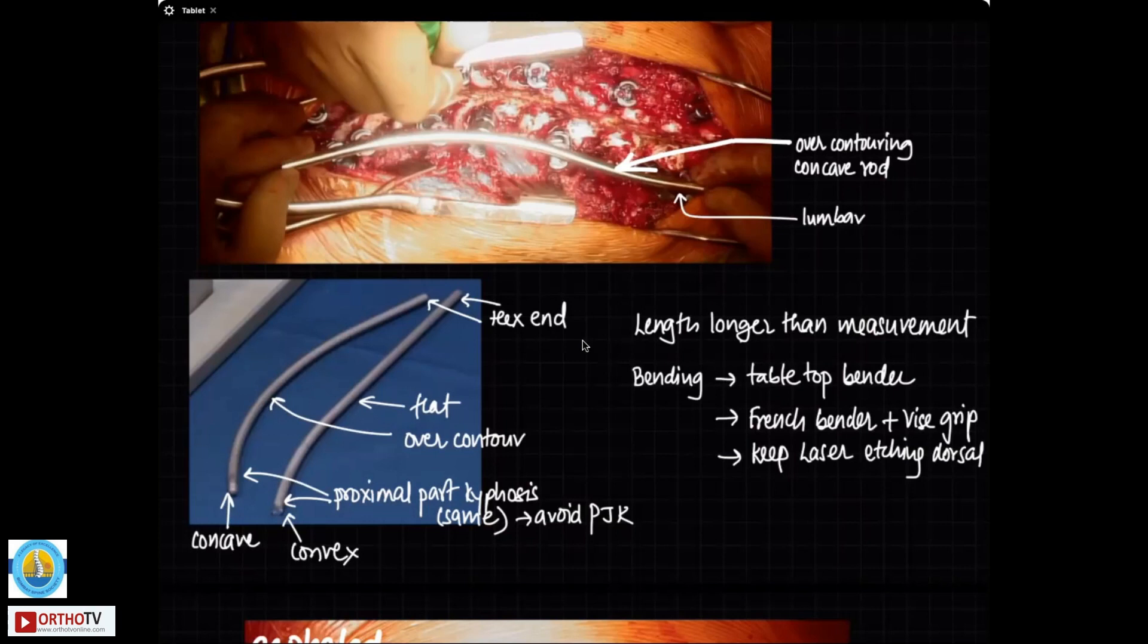Use a tabletop bender or a French bender. I usually don't like to use a French bender because it notches the rod at multiple levels. I use in-situ benders to make one smooth curve and make sure that you are keeping the laser etching. Now, most of these rods have a line that is drawn on the top of the rod. Make sure that that line always is dorsal. So you will not bend the rod in different planes if you always keep a watch on that line. And that laser etching that is there on the rod, also you try to keep it always facing dorsally while you are correcting it so that you can keep the rod in perfect sagittal alignment as the correction happens.